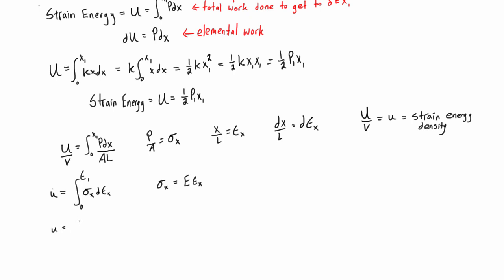So we're going to get strain energy density is equal to integral from zero to epsilon one of E times epsilon x d epsilon x. Okay, so we'll pull out the capital E here, as it is a constant. So we have E times integral from zero to epsilon one of epsilon x d epsilon x. And this basically just simplifies to one half E epsilon x squared.